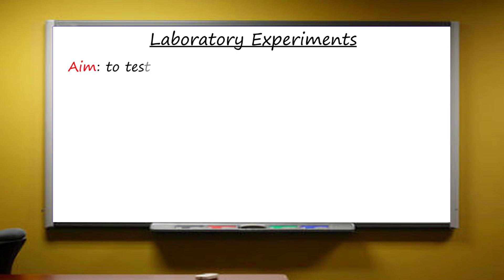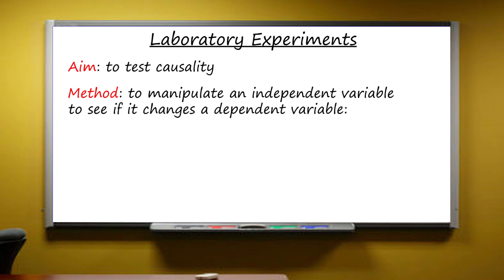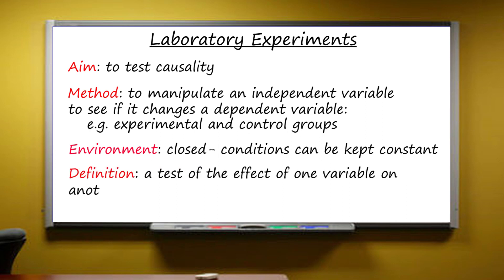The aim of experiments is to go beyond description and test causality. The method is to manipulate something called an independent variable to see if it brings about change in something else called a dependent variable. A common way of isolating the independent variable is by randomly dividing participants into an experimental and a control group, and then only applying the independent variable to the experimental group. The laboratory is a closed environment where the influence of other variables can, as far as possible, be kept constant. So a laboratory experiment is a test of the effect of one variable on another under closed conditions.